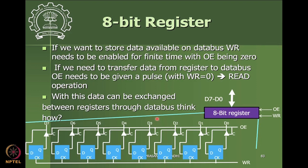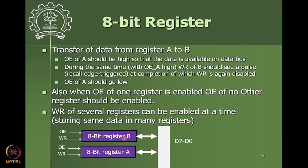Data can be exchanged between registers through the data bus. For example, with register A and register B, to transfer data from A to B: first enable output enable of register A so data goes to the data bus, then simultaneously give WR a high pulse so that data is stored in register B, then bring WR low. The data in register A is still intact — we haven't written anything new to it.